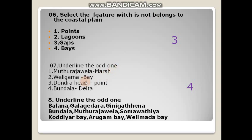Underline the odd one: Muttarajuvil is a mass — correct. Valigam is a bay. Dondra is a point. Bundala is not a delta; it is also a mass. Next odd one: Balane, Galakitre, and Ginigathena are gaps belonging to the central mountain. Koddiyar Bay, Arugam Bay, and Valimadal Bay are bays belonging to the coastal plain. So the gaps group is the odd one out as it belongs to the central mountain.